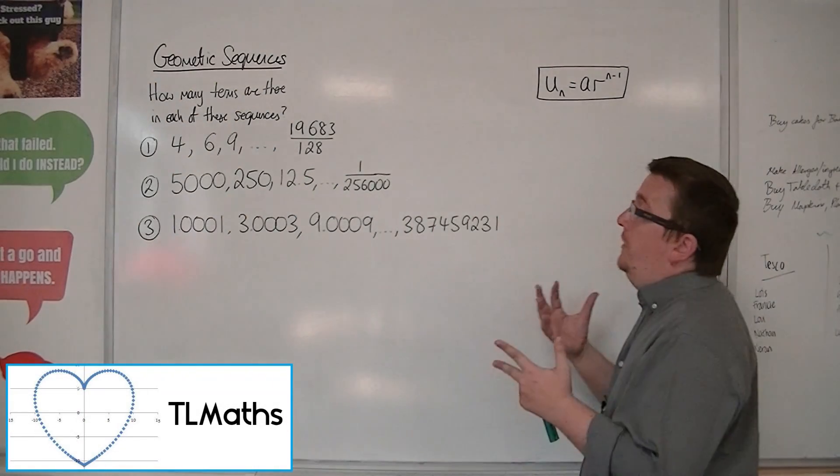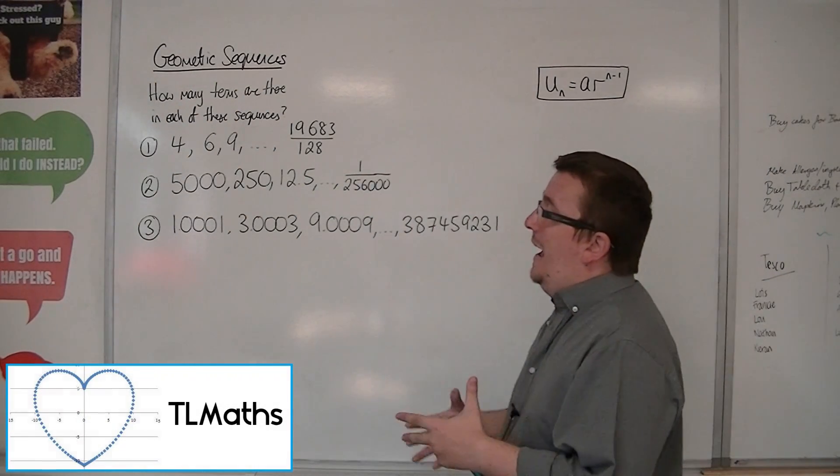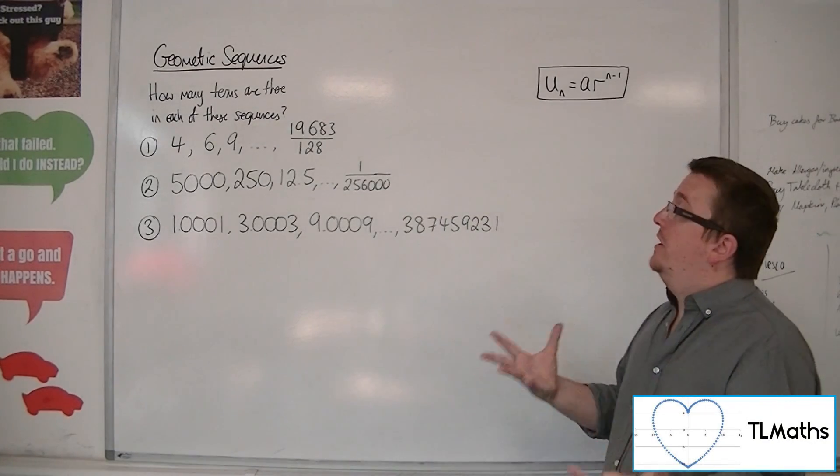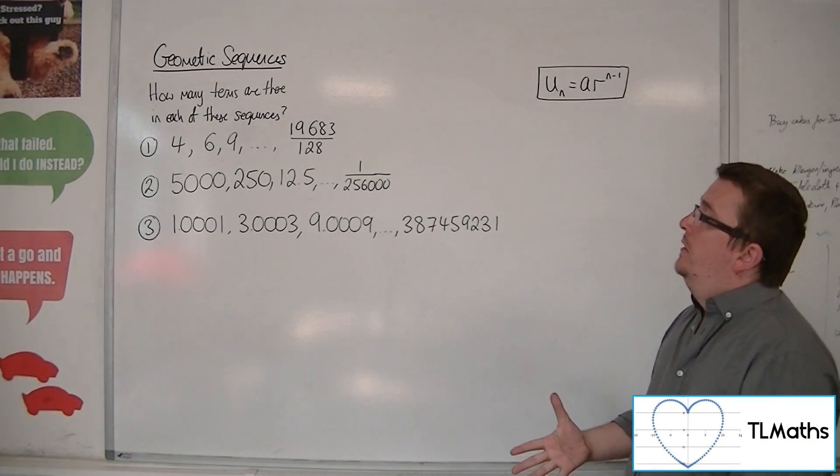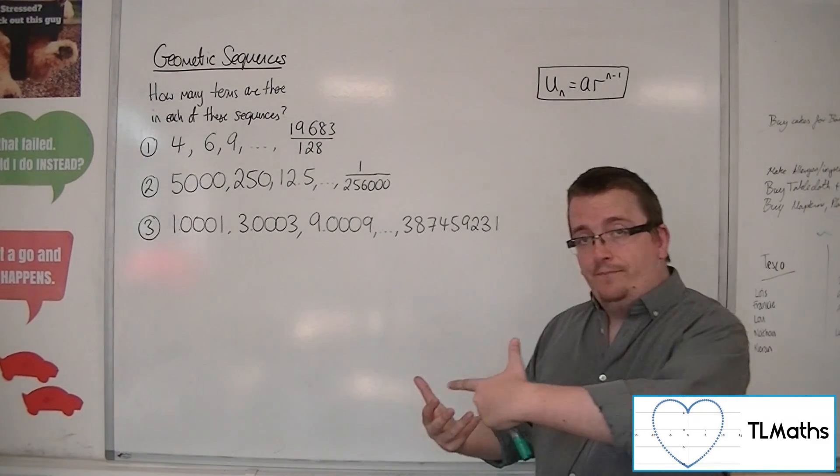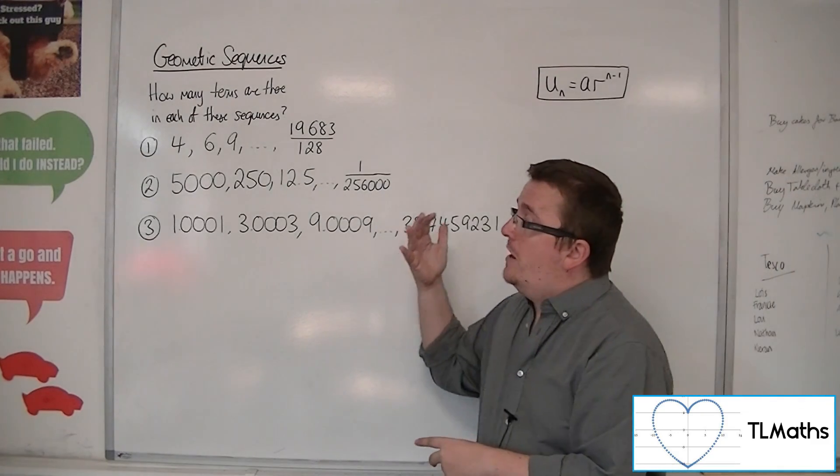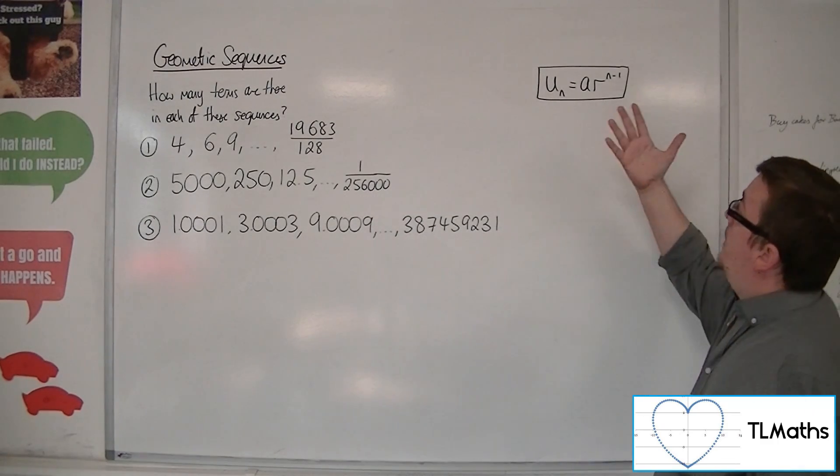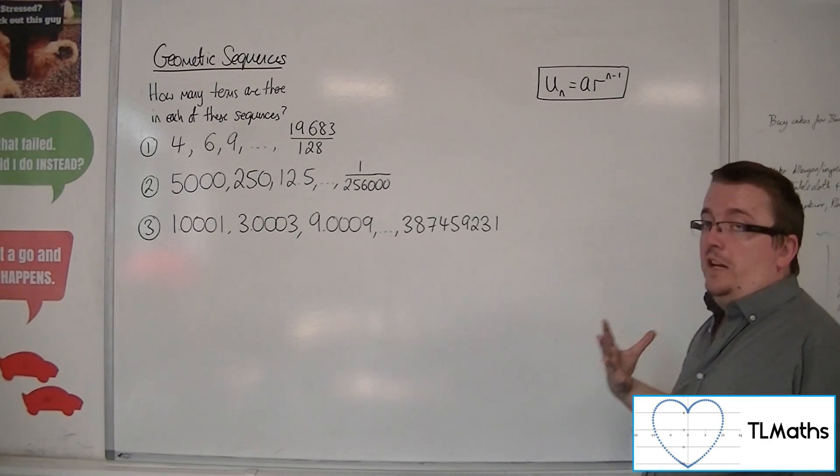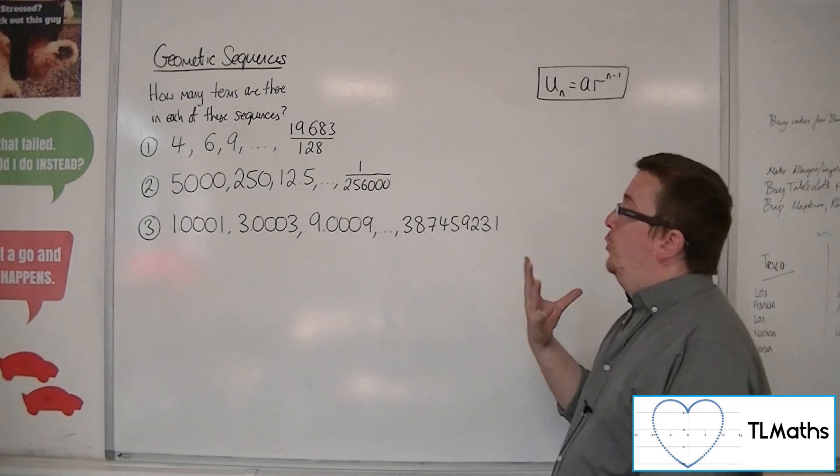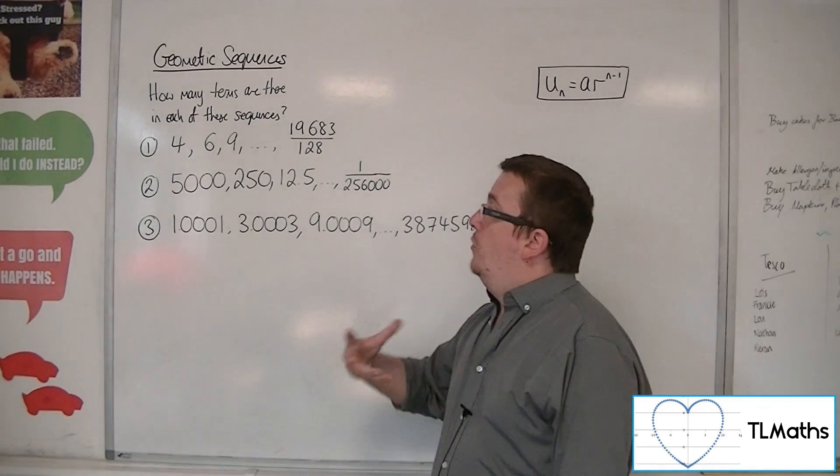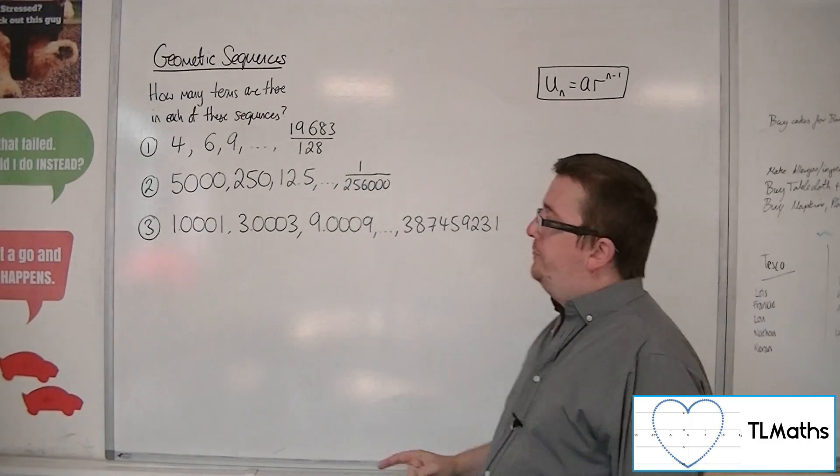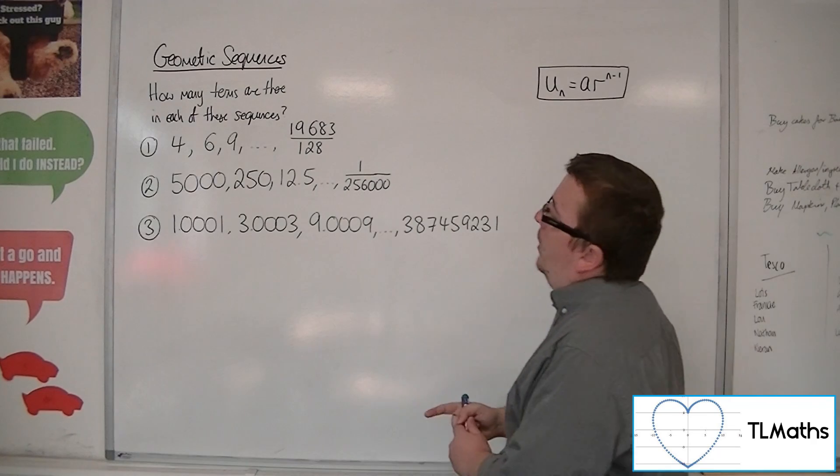Okay, so let's say I've got these three sequences, and I don't know how many terms there are in each of these sequences. That's what I need to find, n. Now I can figure out a, the first term, I can figure out r, the common ratio, and then I'm going to have to employ this formula that we've been using for the nth term in order to determine what n, or which n, will get me and generate that term in the sequence. So let's have a look at number one.